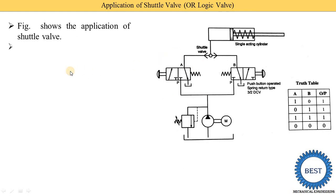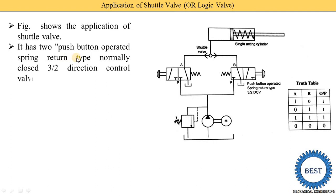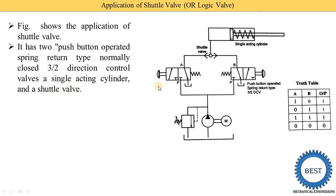The OR logic circuit has two push-button operated, spring return, normally closed three-by-two directional control valves, a single-acting cylinder, and a shuttle valve. It is push-button operated, and normally closed means that when the operator has not pressed the switch, the valve is closed. In the normally closed position, the P port is closed.